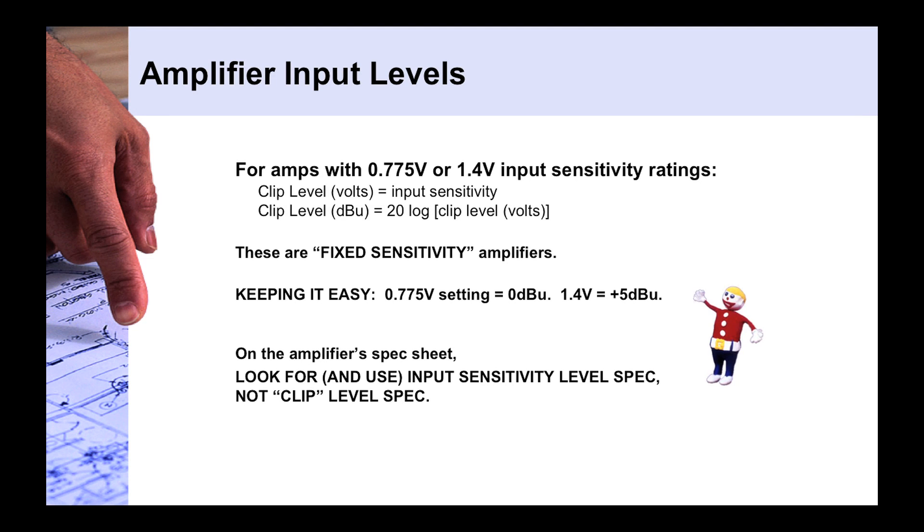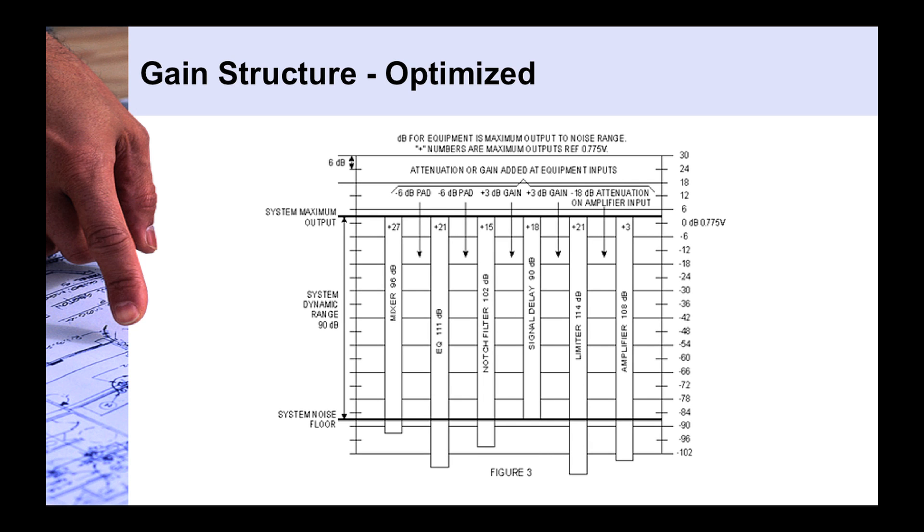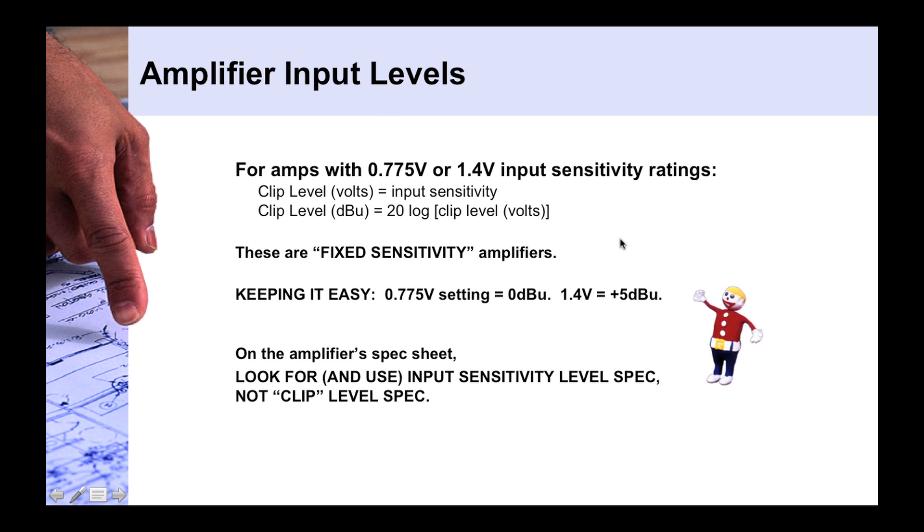Talking a little bit about amplifier input levels, it's easy to say, here in the last graph to just knock it down by 18 dB because its input capability is plus 3.